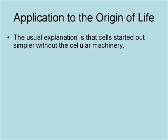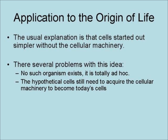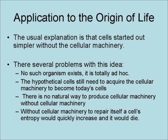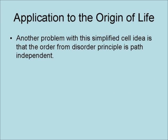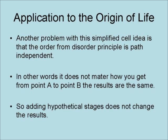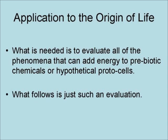The usual explanation is that cells started out simpler — without the cellular machinery. There are several problems with this idea: no such organism exists, it is totally ad hoc, the hypothetical cells would still need to acquire the cellular machinery to become today's cells, there is no natural way to produce cellular machinery without cellular machinery, and without cellular machinery to repair itself, a cell's entropy would quickly increase and it would die. Furthermore, the order-from-order principle is path-independent — it does not matter how you get from point A to point B, the results are the same. So adding hypothetical stages does not change the results.